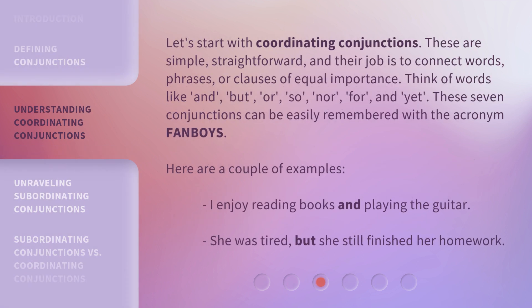Let's start with coordinating conjunctions. These are simple, straightforward, and their job is to connect words, phrases, or clauses of equal importance. Think of words like and, but, or, so, nor, for, and yet. These seven conjunctions can be easily remembered with the acronym FANBOYS. Here are a couple of examples: 'I enjoy reading books and playing the guitar.' 'She was tired, but she still finished her homework.'